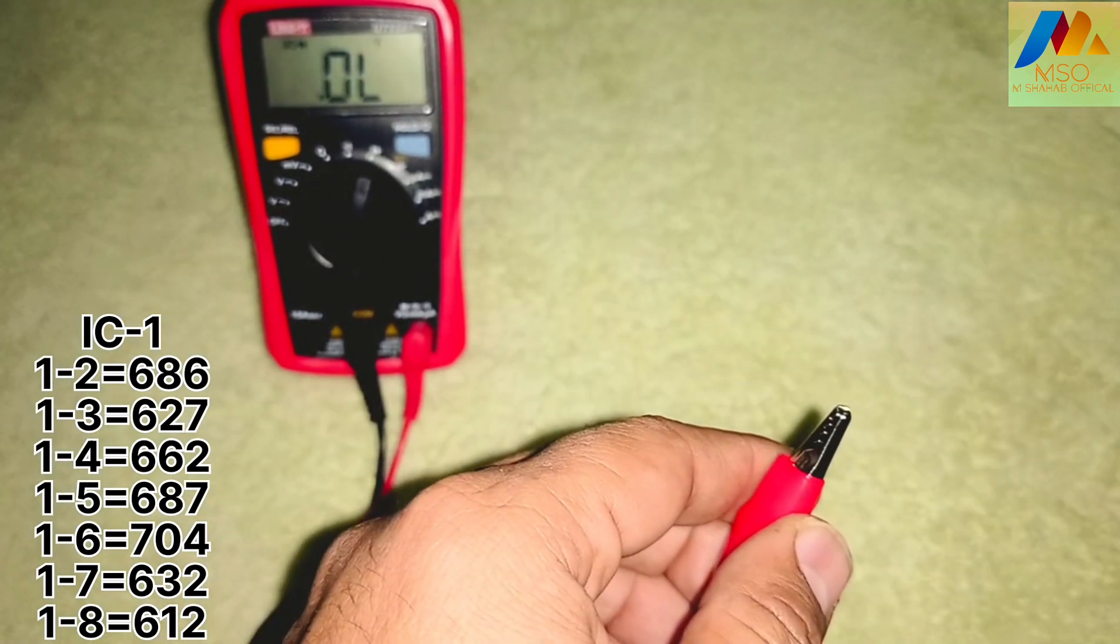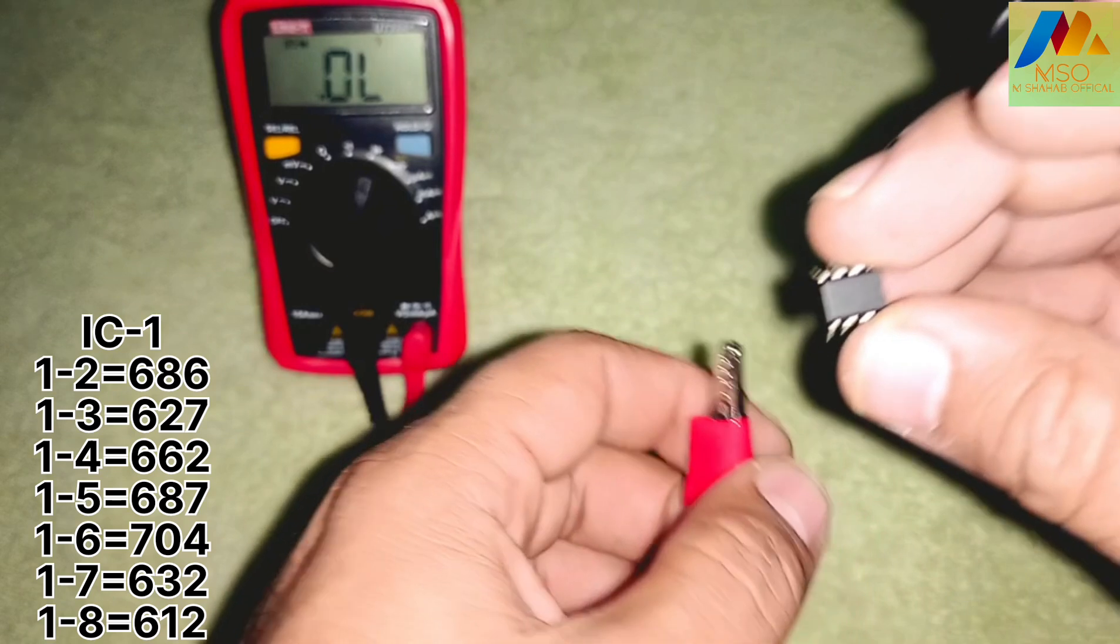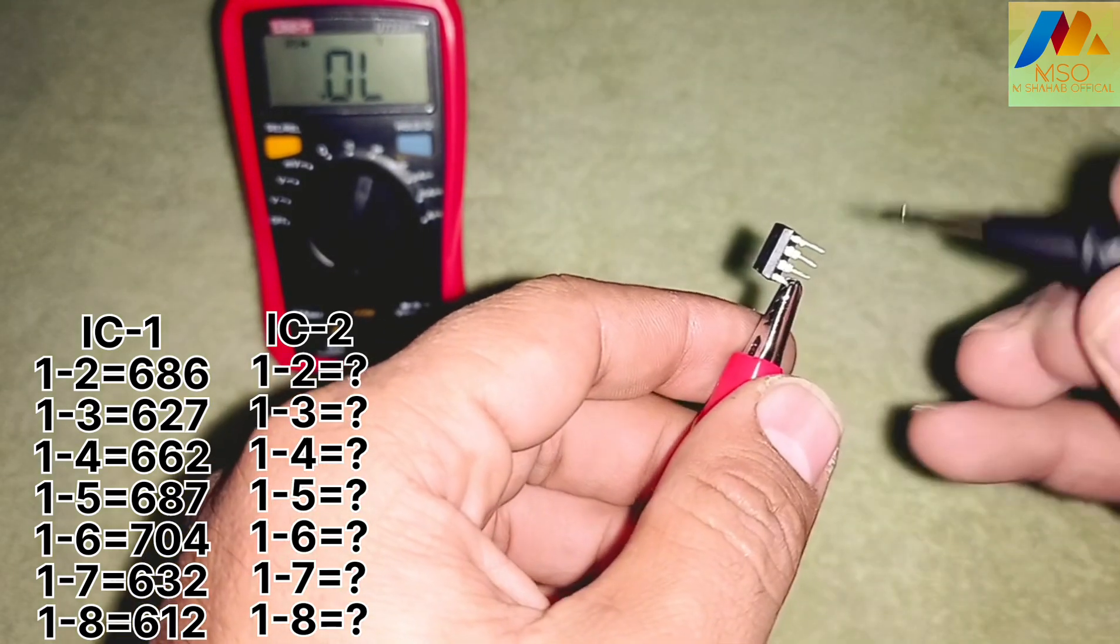From which we took three different ICs, now we will take second IC and connect the positive probe of the multimeter to its pin number 1.